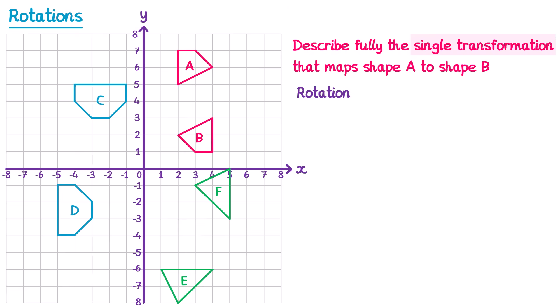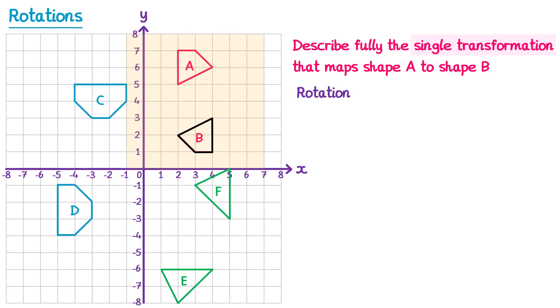Then we need to give two more bits of information. First, we describe how many degrees the shape was rotated — this is easy to work out with tracing paper. Trace around shape A, then turn the tracing paper until it fits perfectly on shape B. I'll go one quarter of a turn first to see if it fits — it doesn't — so I'll go another quarter, which is half a turn, and it fits. Half a turn is 180 degrees, so I write down 180 degrees. And remember, for 180 degrees you don't need to say clockwise or anticlockwise.